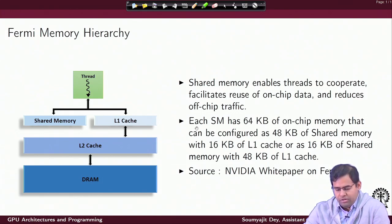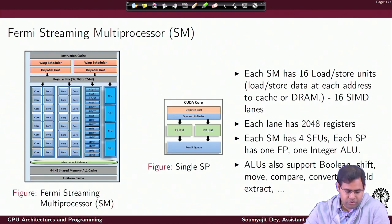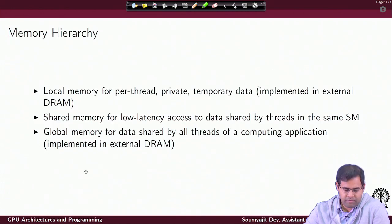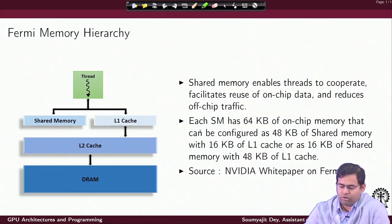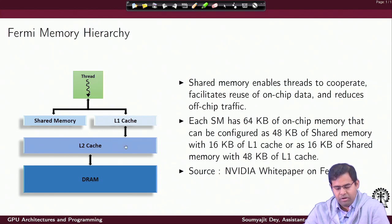Each SM has 64 KB of on-chip memory. This memory is configurable — by on-chip memory I mean this shared memory and L1 cache combined, which is 64 KB. It can be configured as 48 KB of shared memory with 16 KB of L1 cache, or alternatively as 16 KB of shared memory with 48 KB of L1 cache. Both configurations are possible and it depends on what you want to do. If you need more collaborative execution across the different CUDA cores inside the SM, then you may prefer to have more shared memory.